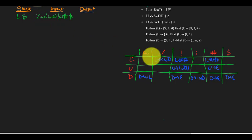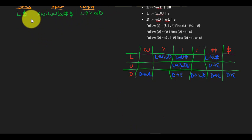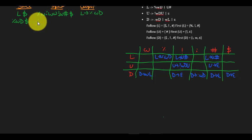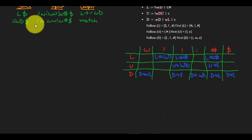So now L on percentage symbol — we have to use a rule L goes to %WD. Now that we have seen that L goes to %WD, we pop off L and push in %WD, which is the right side of the variable. We're pushing that inside the stack. And percentage and percentage is a match, so we pop off percentage and we discard it from the input string.